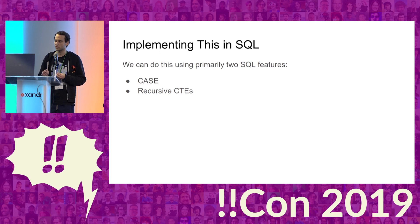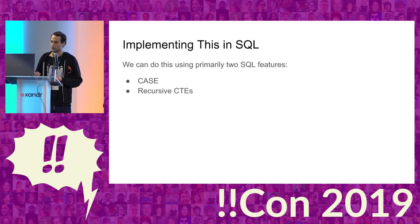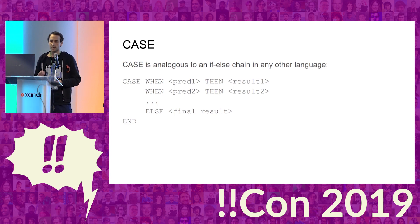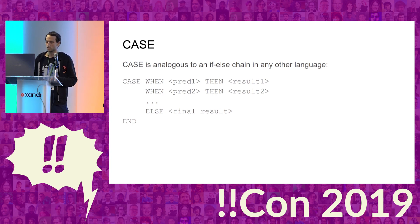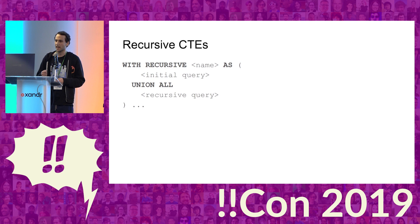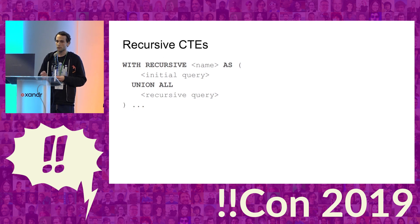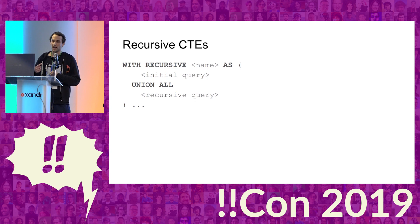To implement this in SQL, we'll use two different features: CASE statements and recursive CTEs. CASE is analogous to if-else in any other programming language. Recursive CTEs are a way to emulate loops in SQL — you give Postgres an initial query and a recursive query. Postgres will first run the initial query, feed those results into the recursive query, and keep doing that indefinitely.